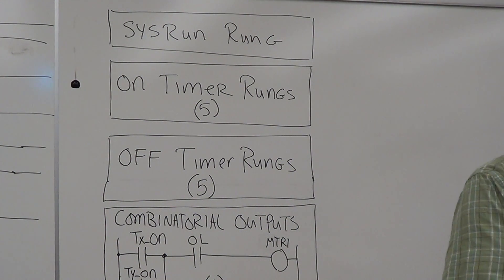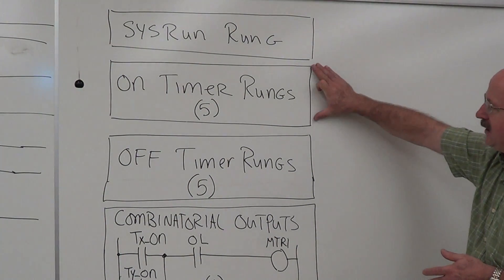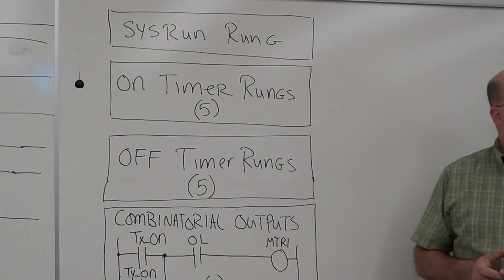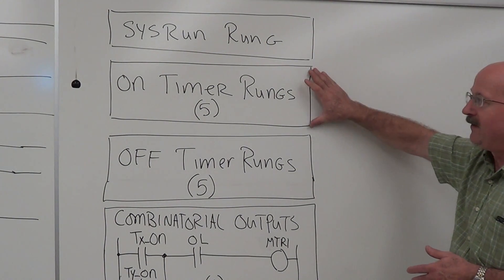We already know that we want another output control to take care of the overloads, because we can't put an overload after an off-delay. If we do have an overload condition, we want to shut everything down. So set this up in functional blocks. Start with your sys run.